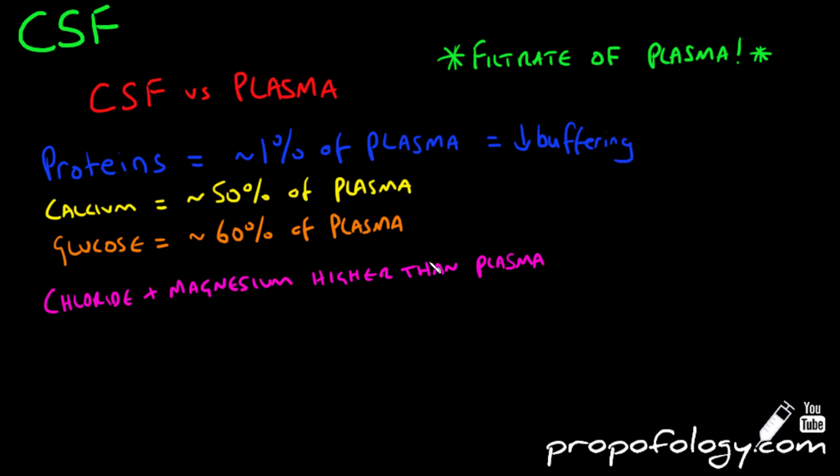It's also worth noting that CSF normally contains only a small number of cells, usually lymphocytes and monocytes. The total cell count should be less than 5 cells per millimeter cubed.